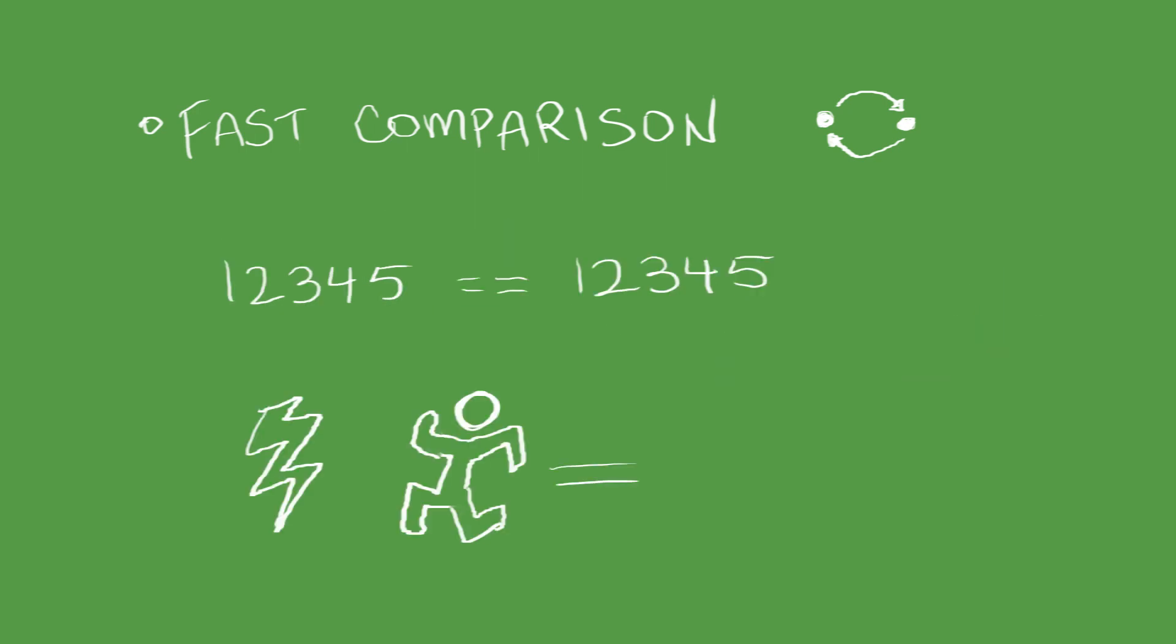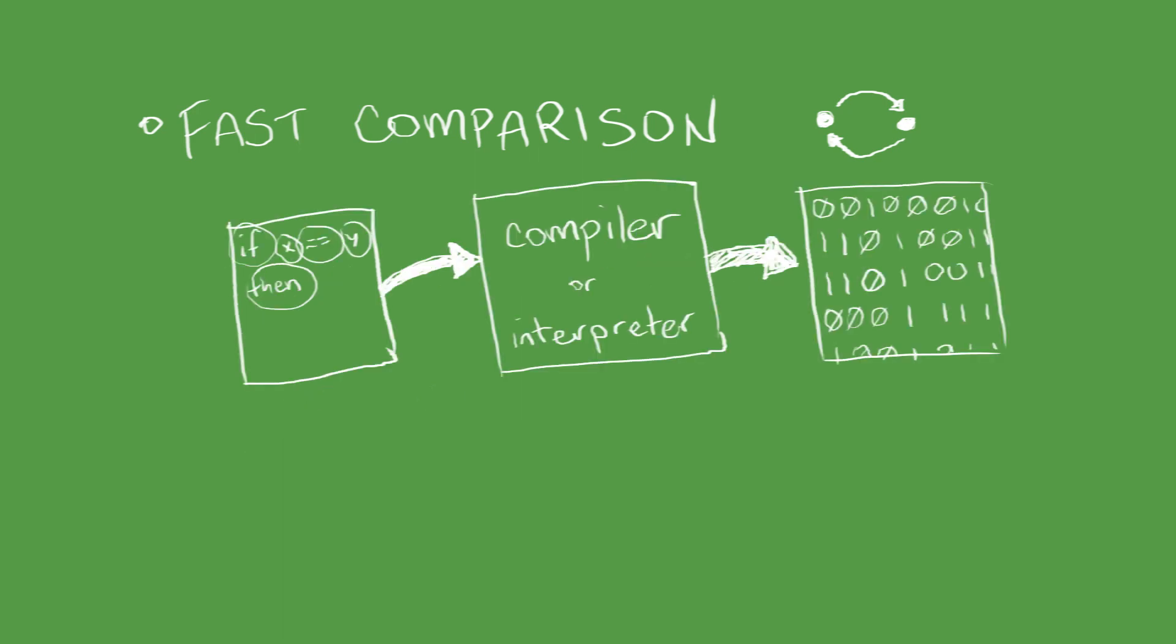In systems where string comparisons form the bulk of the work, and the strings are very uniform, for example compilers or interpreters, this savings is significant.